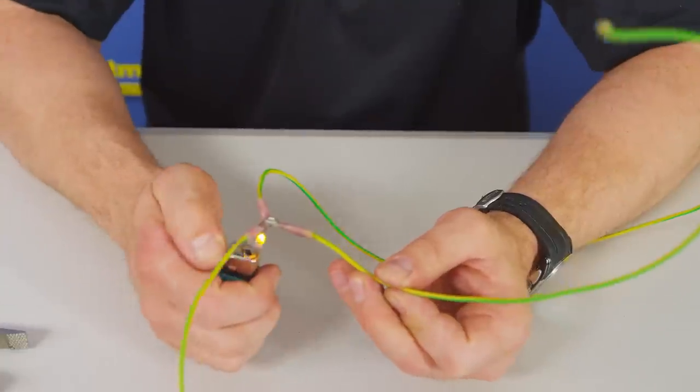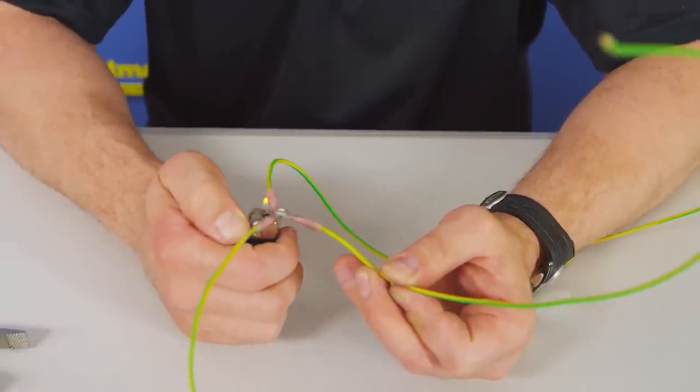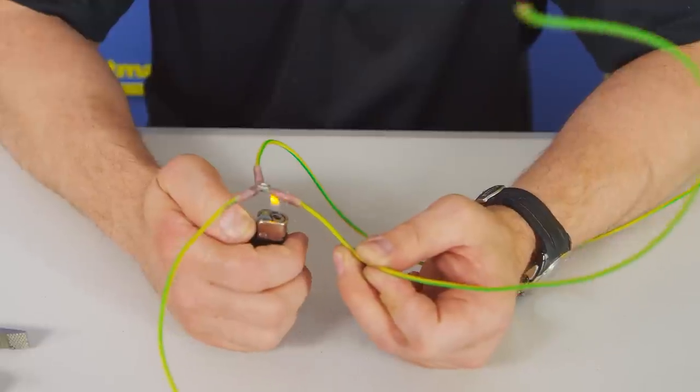And I will now proceed to use a lighter or heat shrink gun to heat up the heat shrink, creating a bond around the cable.